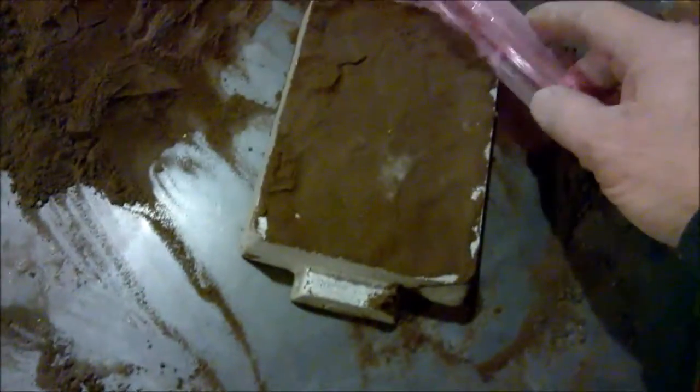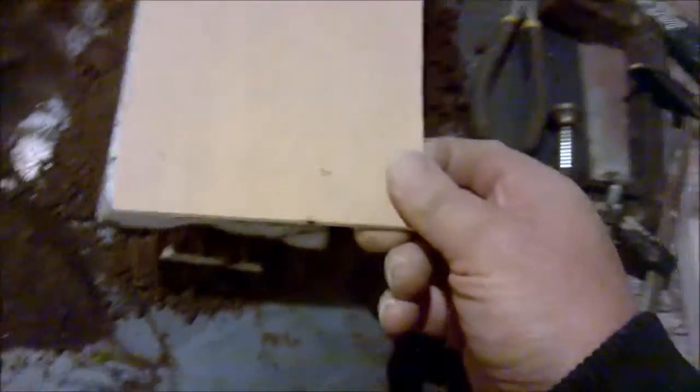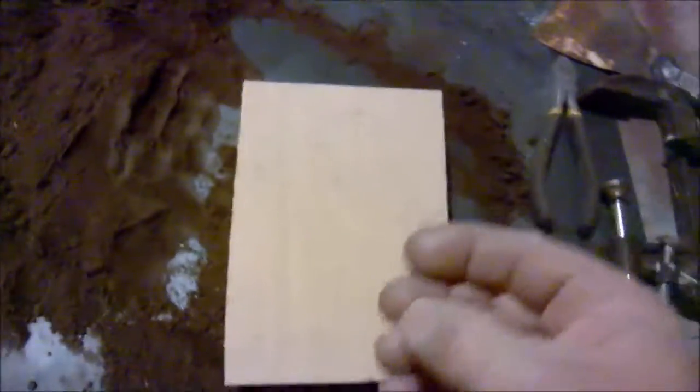Pat it right down in there. Then you take some kind of a straight edge and scrape this smooth. On the back of that we're going to take a little piece of thin plywood, put it on there and we're going to make a sandwich.